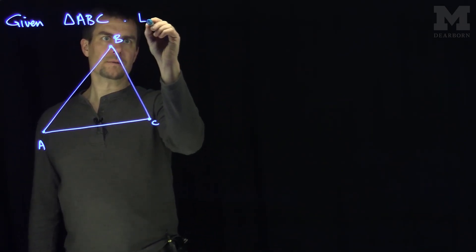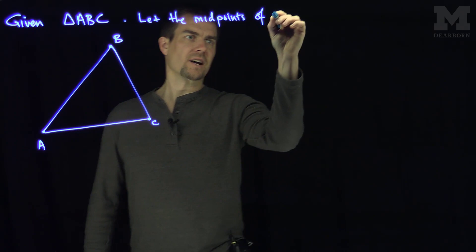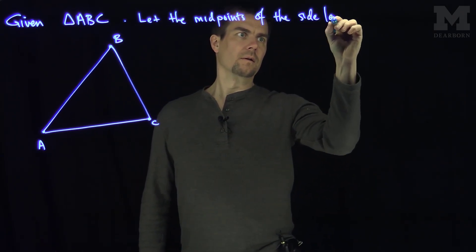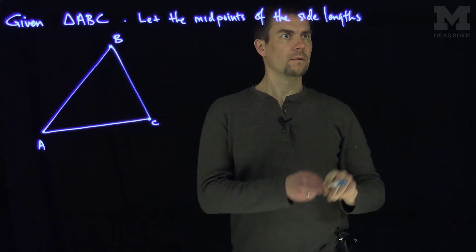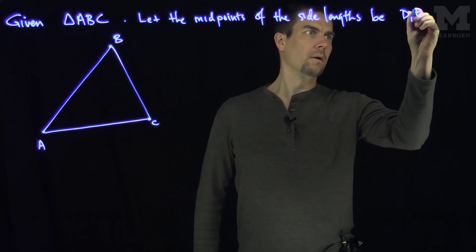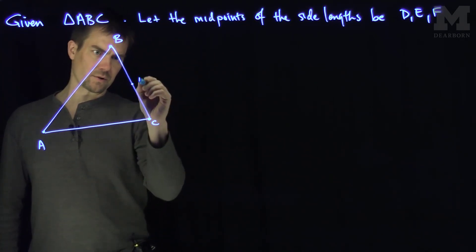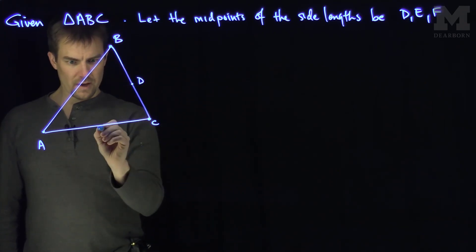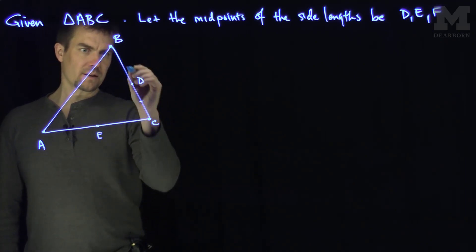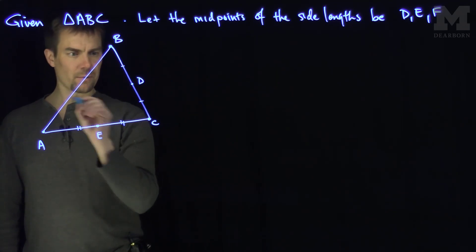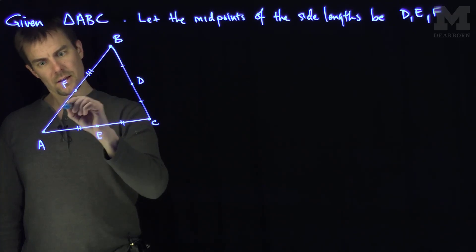Let's plot the midpoints of the side lengths, and we'll call them D, E, and F. The point D is the midpoint opposite from A on side BC. The point E is the midpoint of A and C. And finally we have point F, the midpoint of side AB over here.